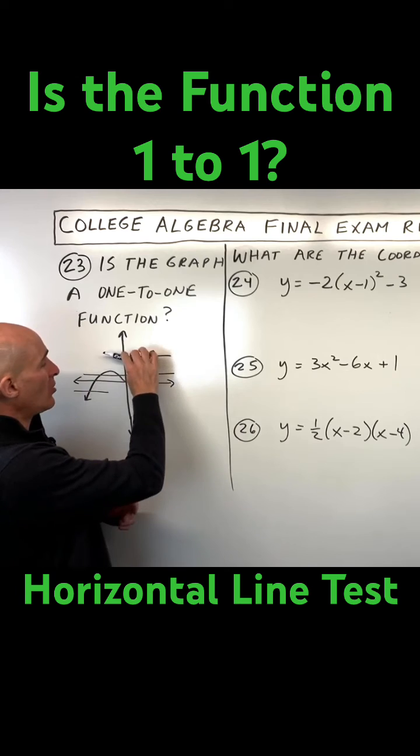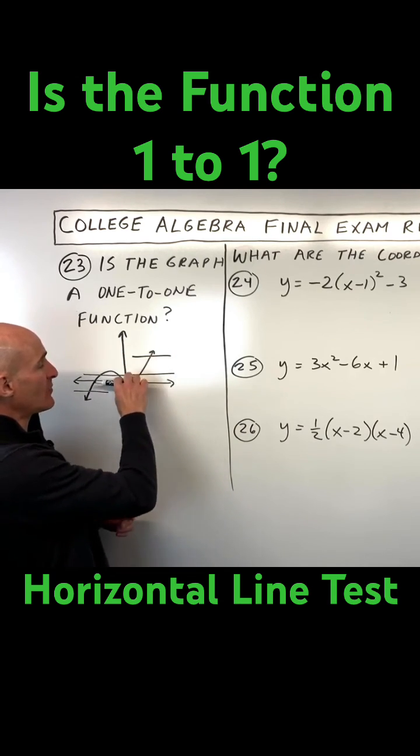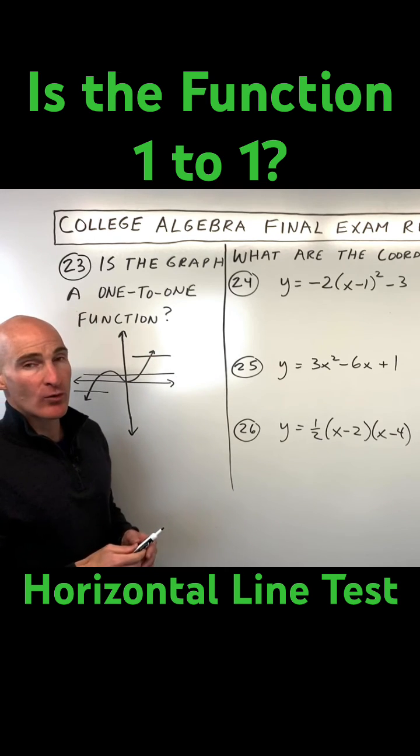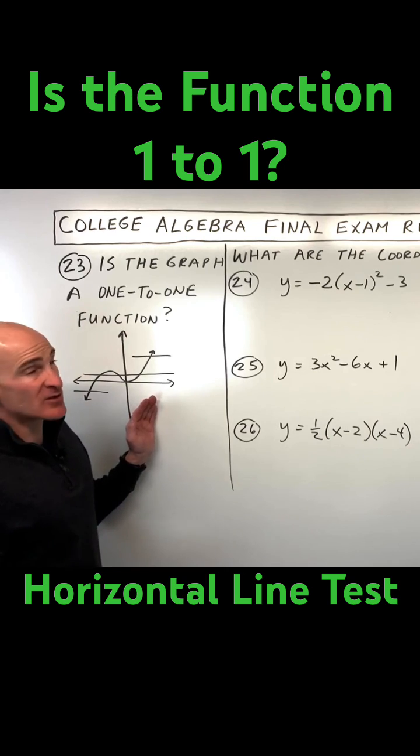But if there's a point along here, when I'm doing the horizontal line test as I raise this line up, if it ever crosses at more than one point, then it's failing that horizontal line test, which means the inverse is not a function.